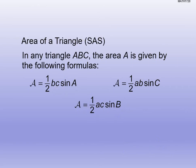Now let's find the area of triangles. For side-angle-side cases, we have three area equations. Area = ½·b·c·sin(A), or Area = ½·a·b·sin(C), or Area = ½·a·c·sin(B). Notice: whatever two side lengths you use, you take the sine of the opposite angle. All three formulas have the ½ factor, and the angle involved must be between the two sides.